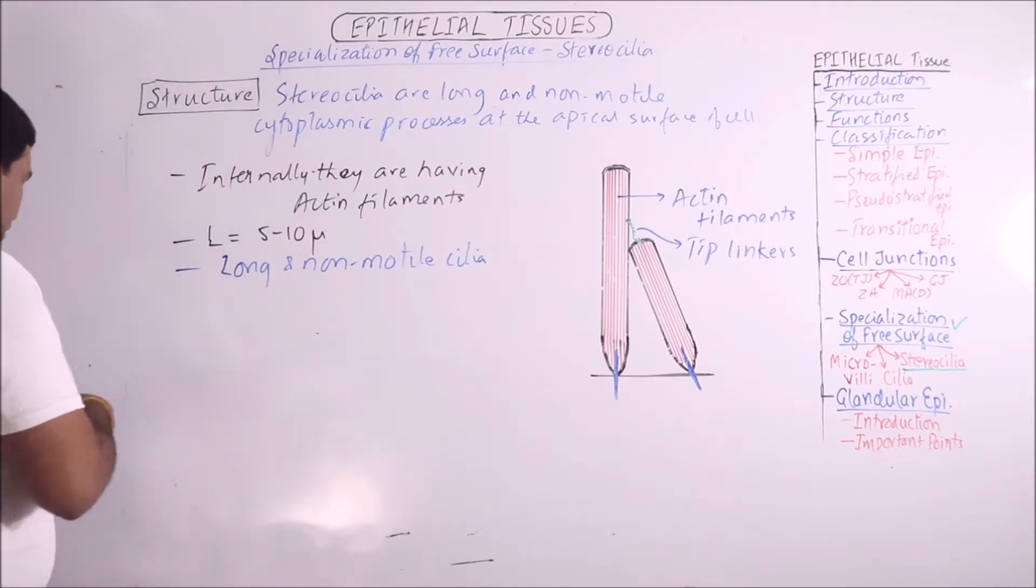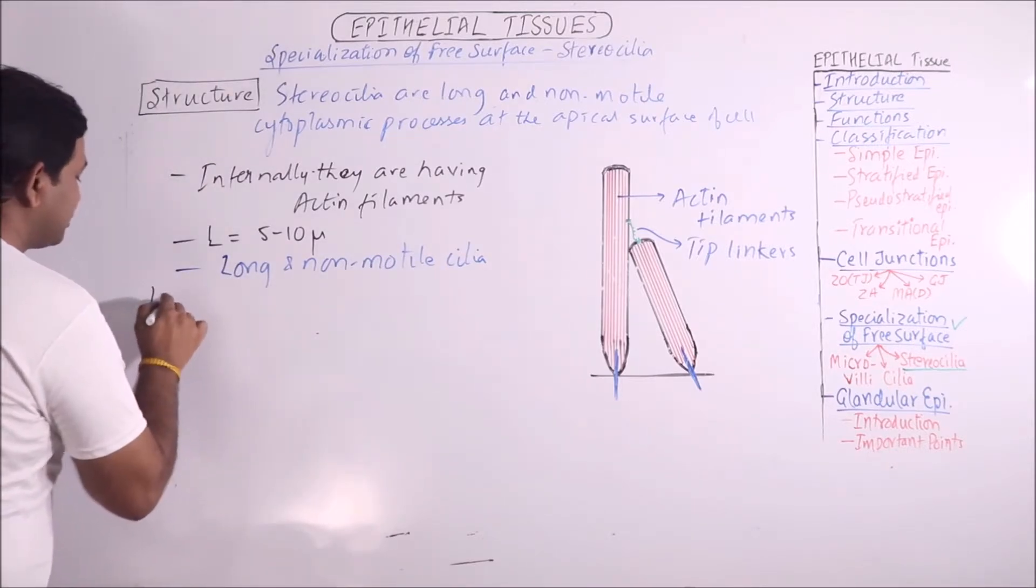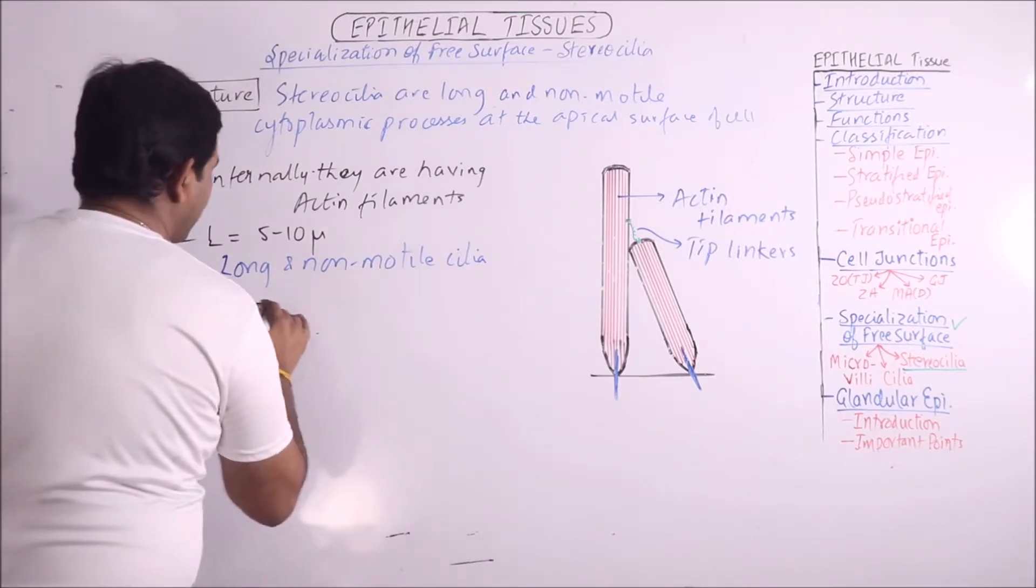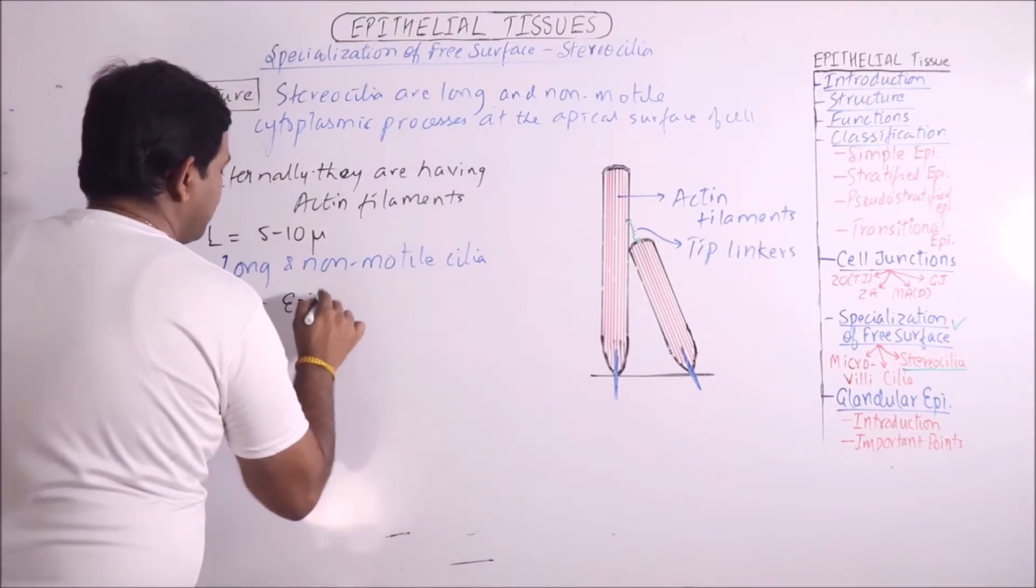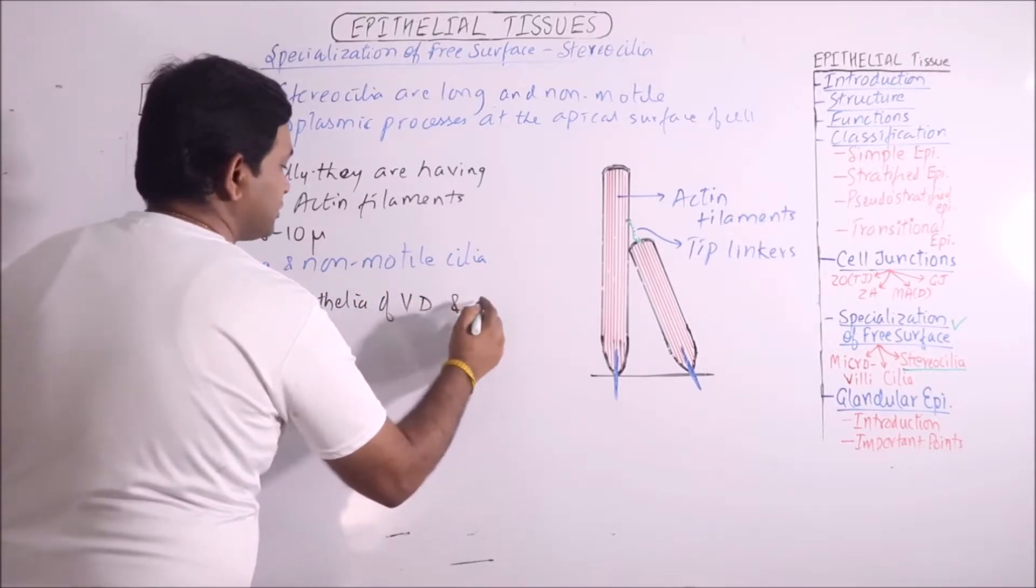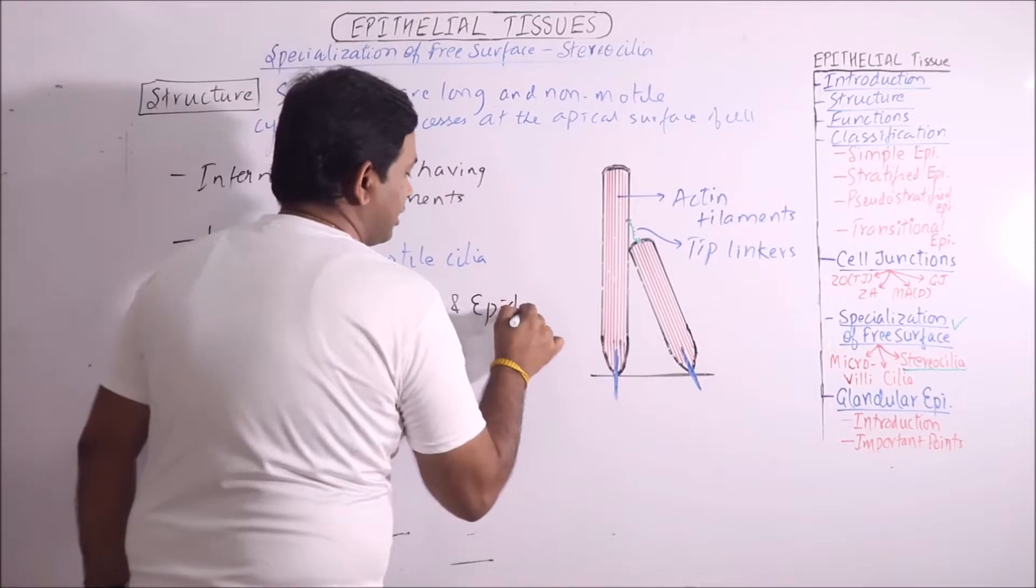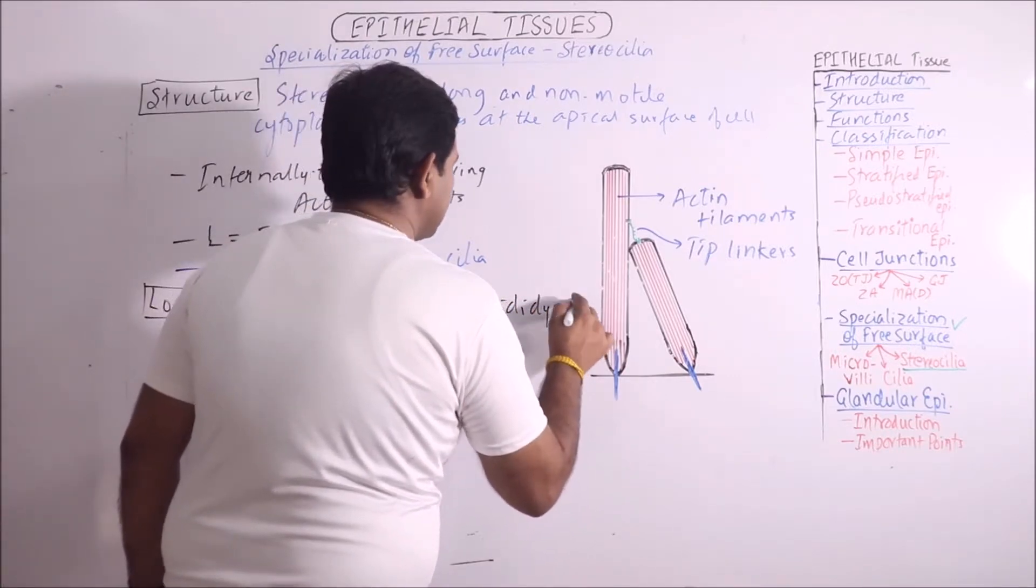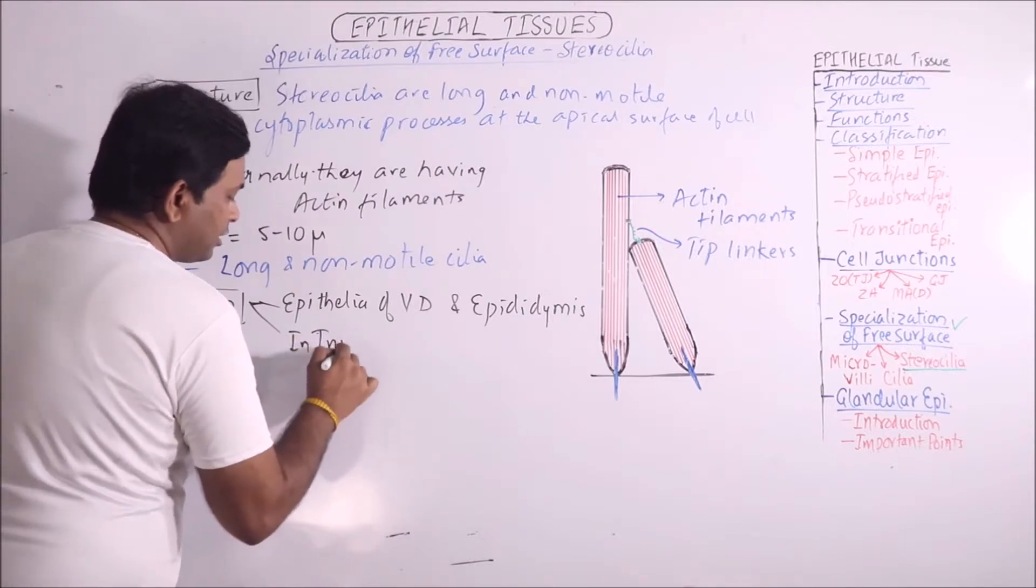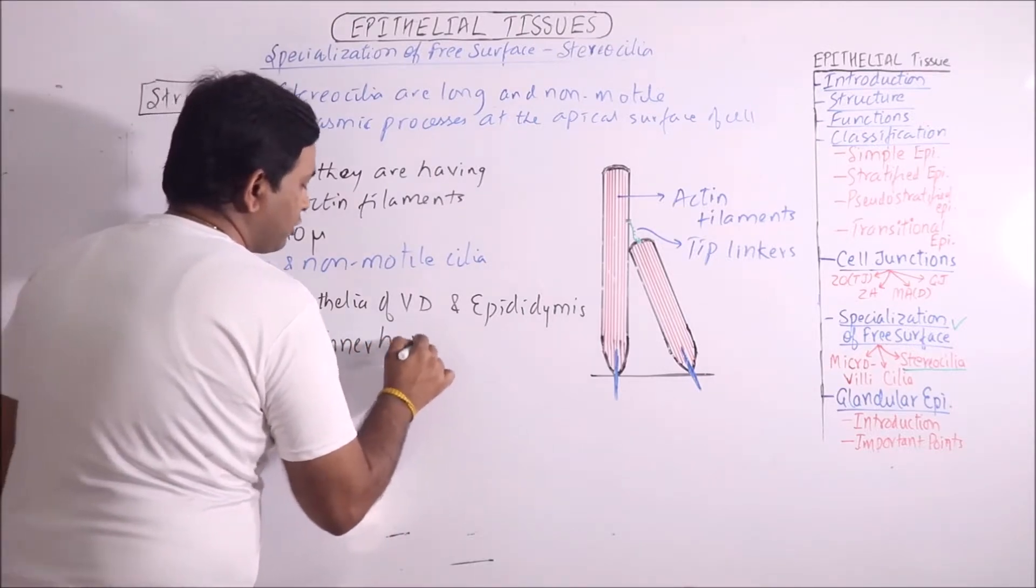Then, location. These are located in epithelia of vas deferens and epididymis, and in inner hair cells of cochlea.